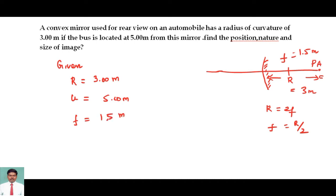Now we see the Cartesian sign convention. According to the Cartesian sign convention, the height of an object or an image measured above the principal axis is taken as positive, below the principal axis is taken as negative.